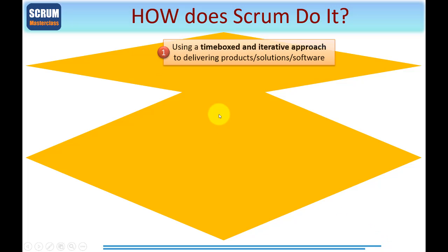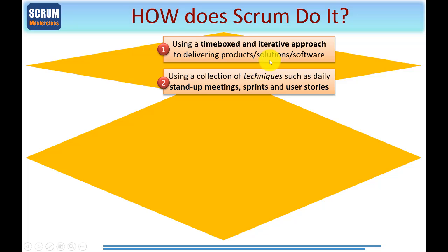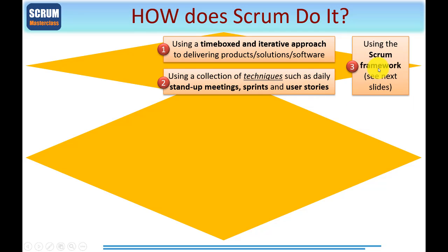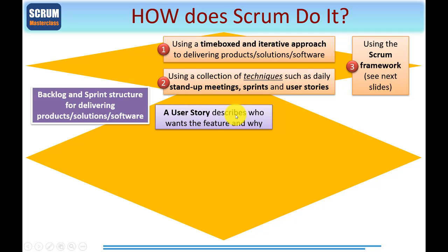How does Scrum go about doing this? It uses a time box — that's a Sprint — and an iterative approach to delivering products, solutions, software, hardware, you name it. It uses a collection of techniques, which we'll go into in far more detail, such as daily stand-up meetings, Sprints, and user stories. And it uses the Scrum framework. As you already know, Scrum has a backlog and Sprint structure specifically designed for delivering products, solutions, or software. A user story describes who wants the feature and why they need it. I'll be sharing a very simple and powerful template that shows you exactly how to express this, so you can create user stories fairly quickly.